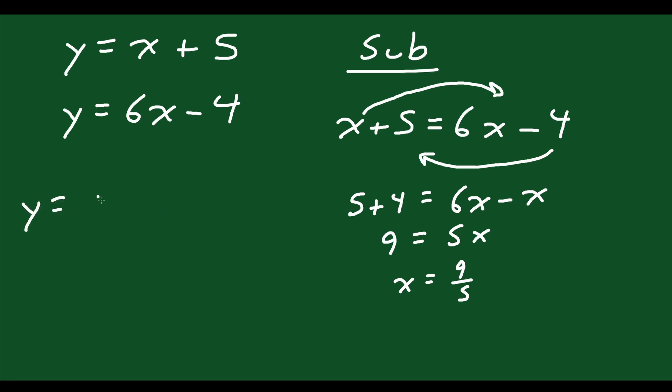So y equals 9 over 5 plus 5. I need a common denominator, so 9 over 5 plus 25 over 5, add those together, you're gonna get 34 over 5, so that's my y value. So the solution here is the point 9 over 5, 34 over 5. That's the point in which these two lines will cross.